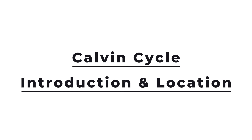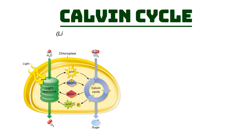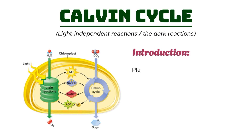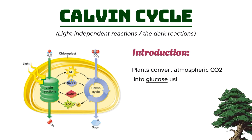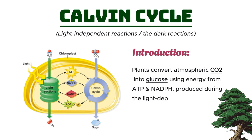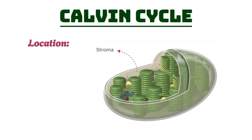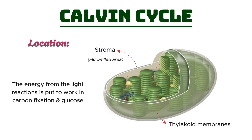Let's start by understanding what the Calvin Cycle is and where it takes place. The Calvin Cycle, also known as the light-independent reactions or the dark reactions, is the process by which plants convert atmospheric carbon dioxide into glucose using energy from ATP and NADPH, which are produced during the light-dependent reactions. This cycle takes place in the stroma of the chloroplasts — the fluid-filled area that surrounds the thylakoid membranes — where energy from the light reactions is put to work in carbon fixation and glucose production.